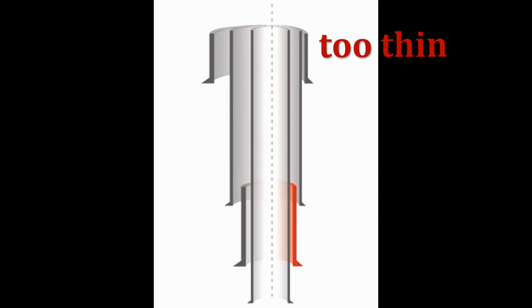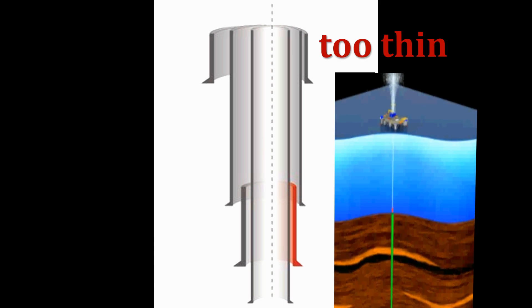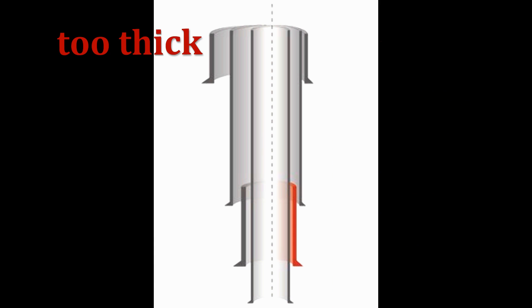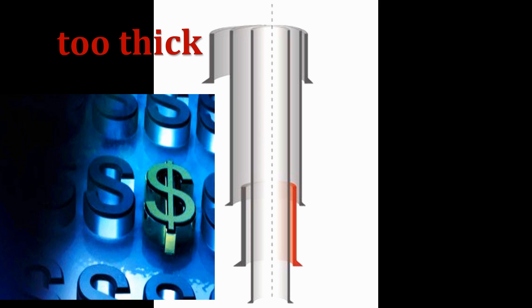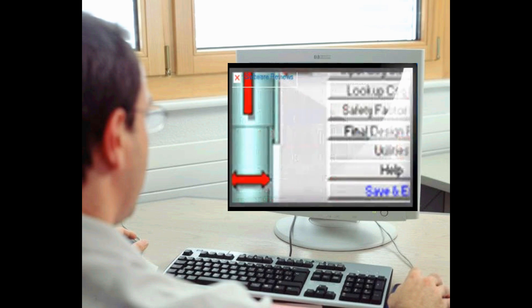For example, if the casing pipe is too thin, the casing can fail, causing a blowout. But on the other hand, if the casing is too thick, then money is spent unnecessarily. Fortunately, there are computer programs that help simplify this process.